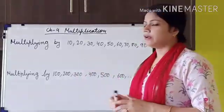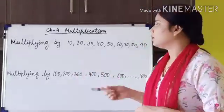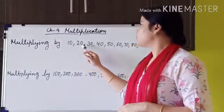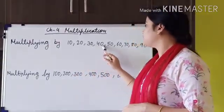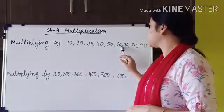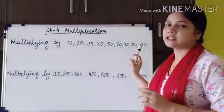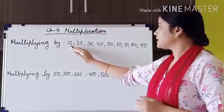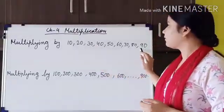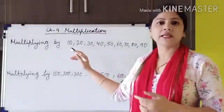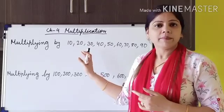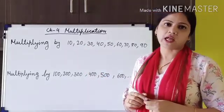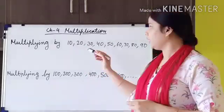Now here I have written 2 topics. The first topic is multiplying by 10, 20, 30, 40, 50, 60, 70, 80 or 90 — numbers in which 0 is placed at the last position, meaning 0 is at the 1's position.